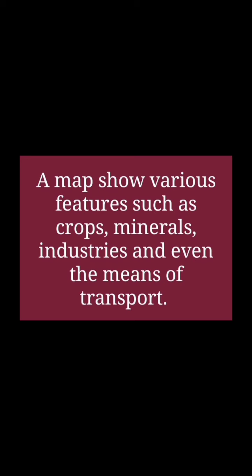It is very difficult to understand how much information a map can contain. Because of that, we use different symbols, words, lines, and colors to show the details on a map — like crops, industries, minerals, roads, and mountains.